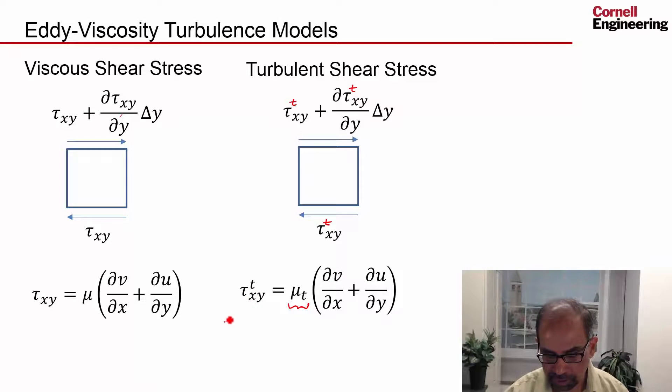This is, if you recall, minus rho u prime v prime, the fluctuations, the average of that. And this has to be written in terms of the Reynolds averages. So essentially you have written the fluctuating, the average of the fluctuations, in terms of the Reynolds averages.